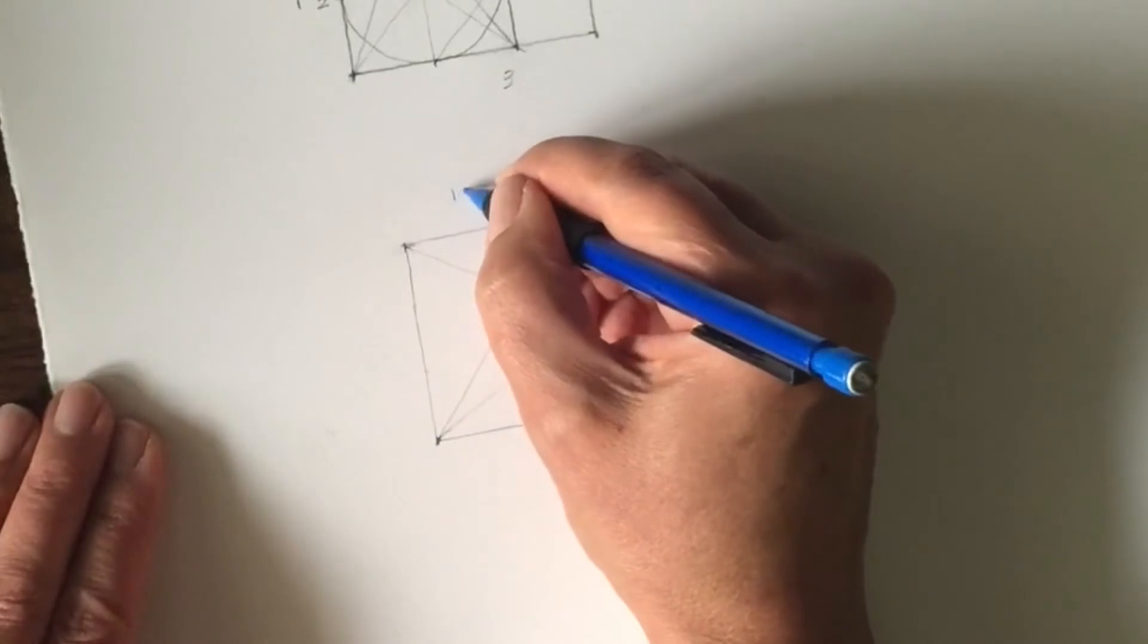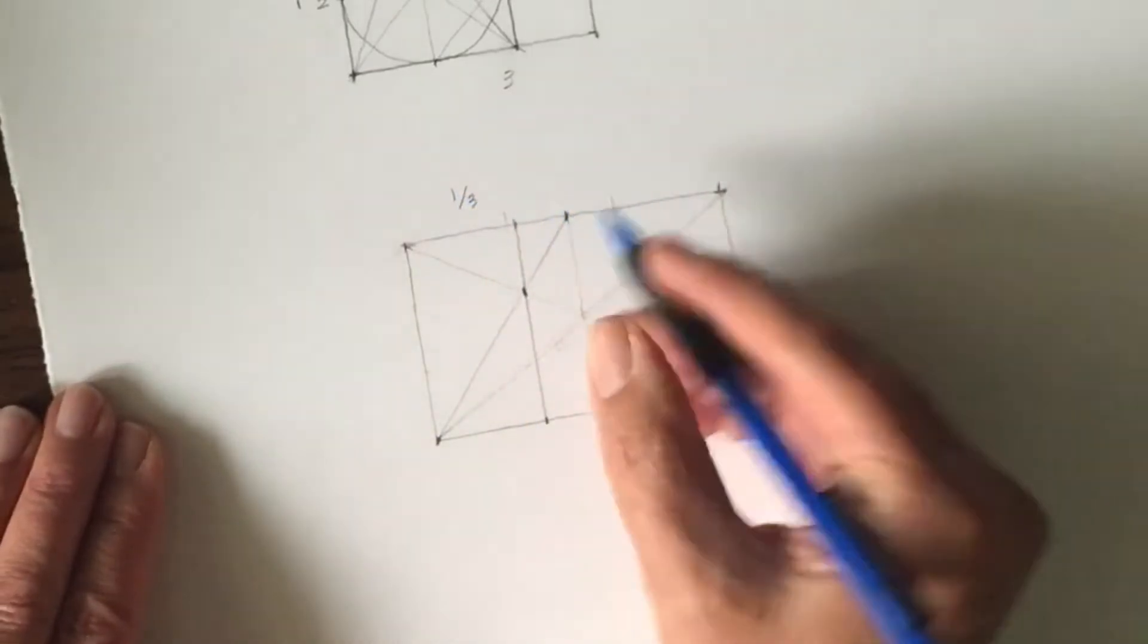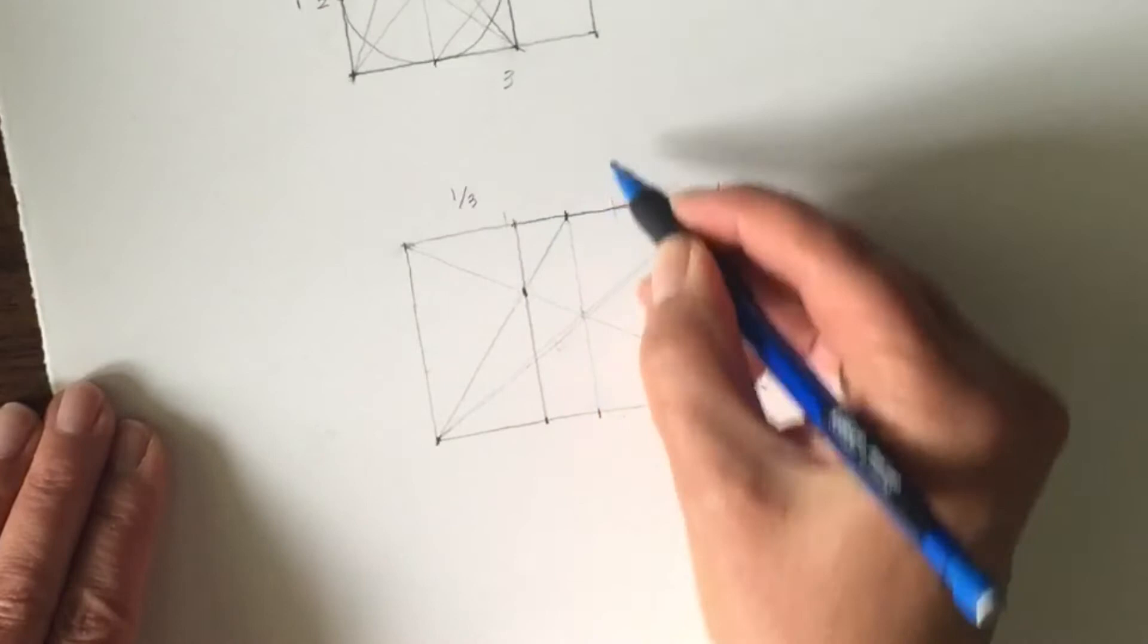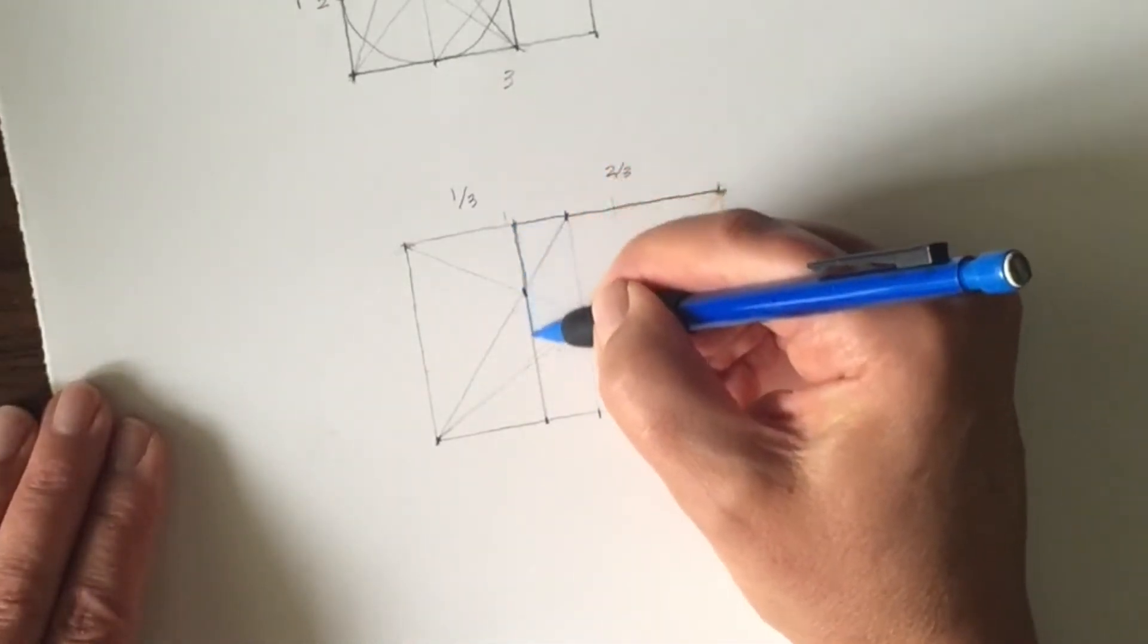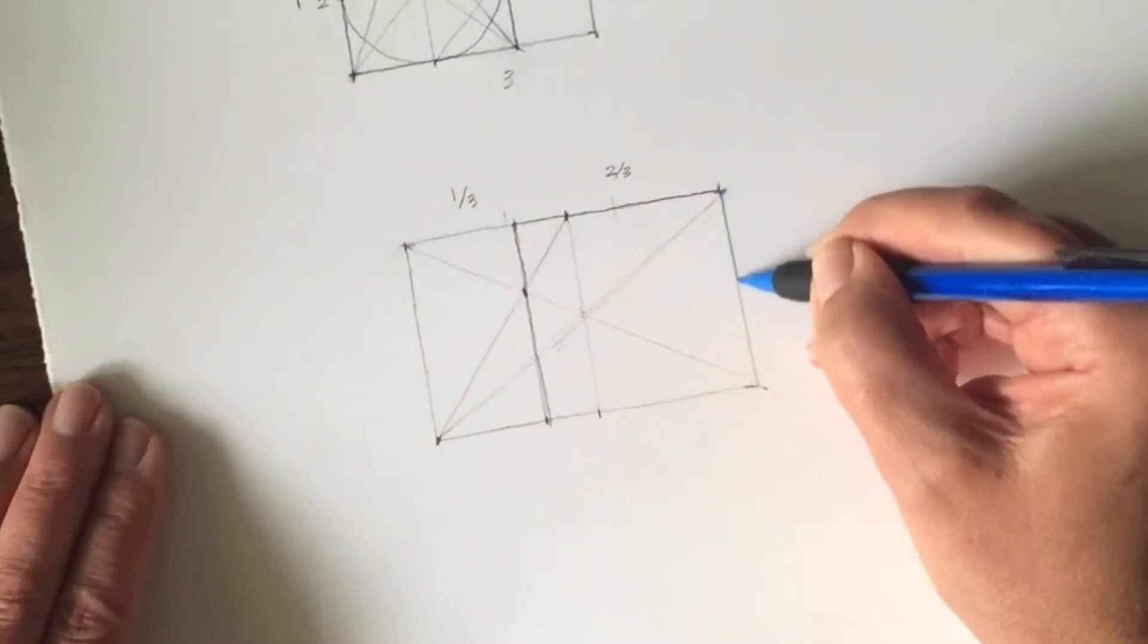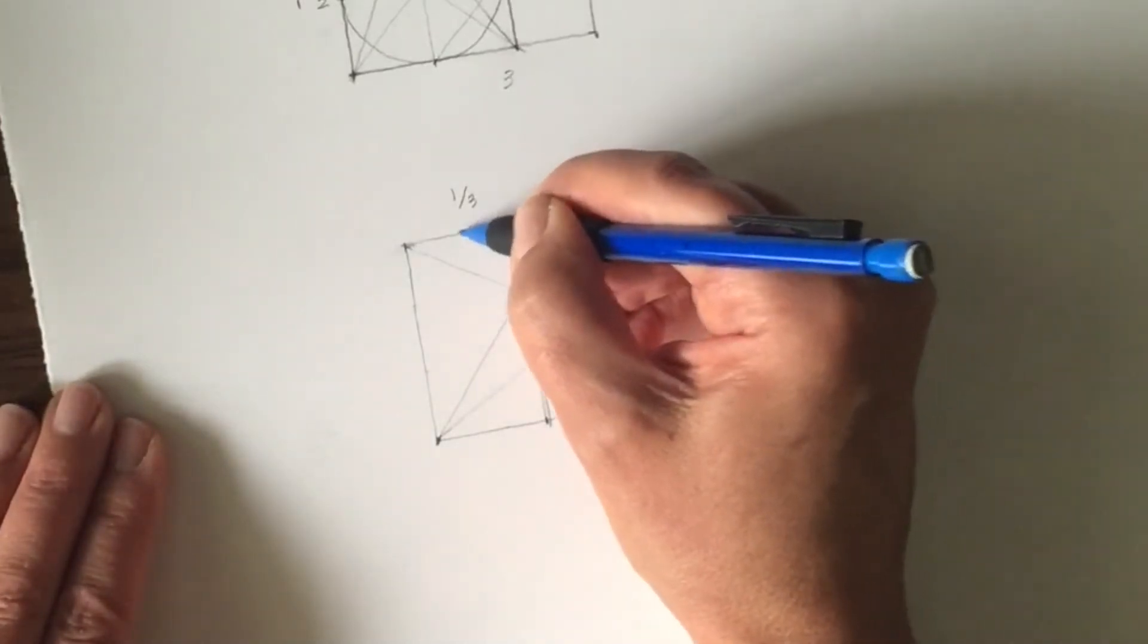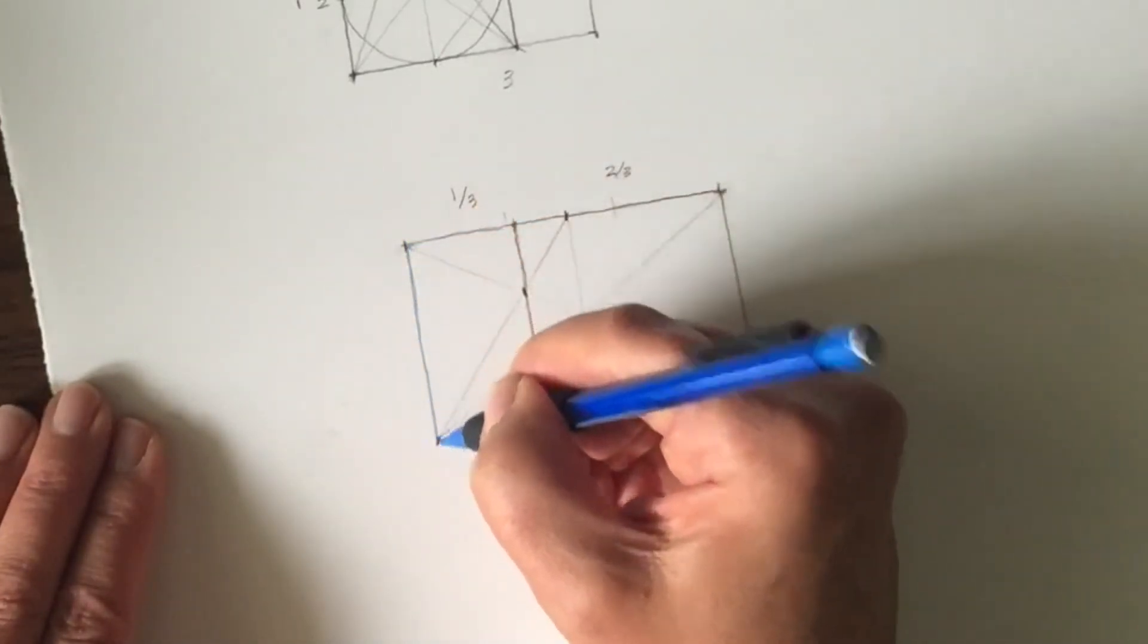So that is one third and the remainder is two thirds like so. And what you've achieved here is one proportionate break up to another.